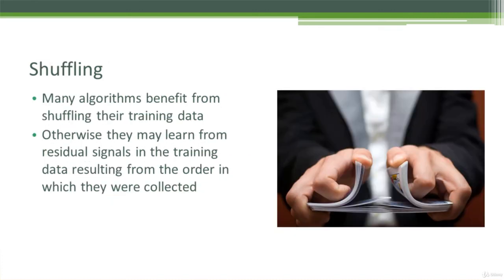Finally, we will talk about shuffling. A lot of algorithms benefit from shuffling your training data. Otherwise, sometimes there's sort of a residual signal in your training data resulting from the order in which that data was collected.